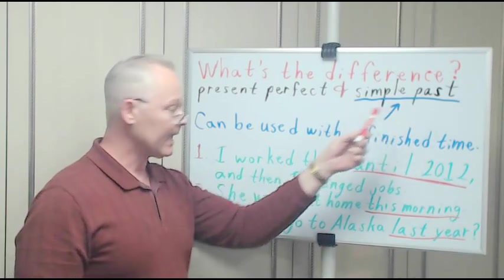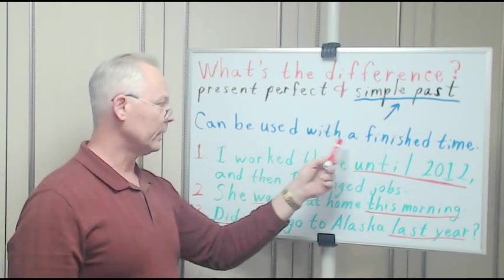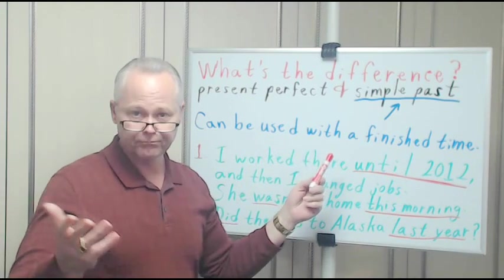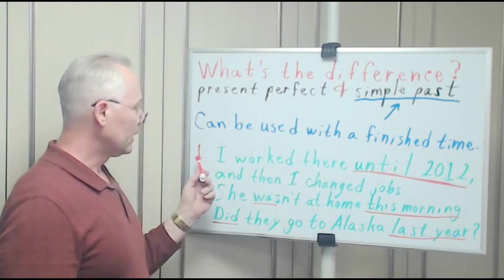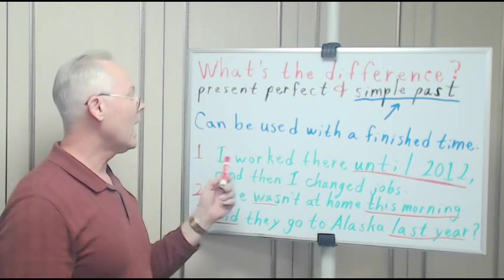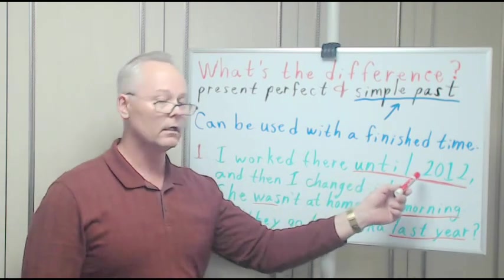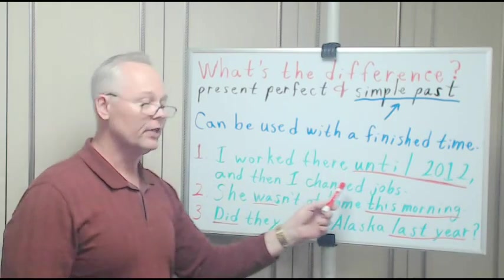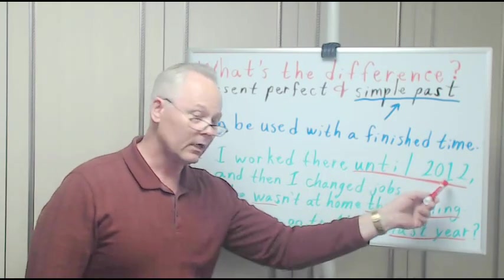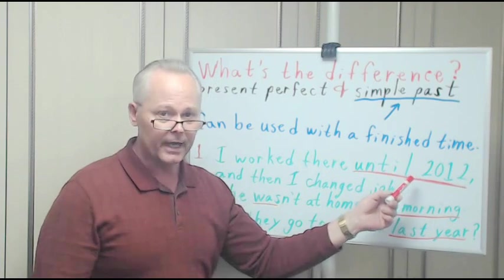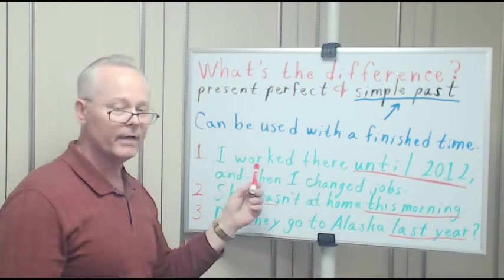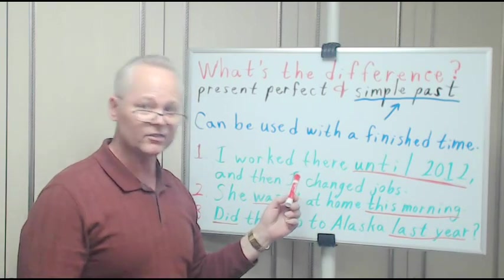The simple past can be used with a finished time. The present perfect cannot be. Okay, let's look at three sentences here. Number one: I worked there until 2012, and then I changed jobs. But until 2012, that's a finished time, so we cannot use the present perfect.